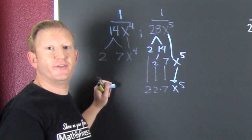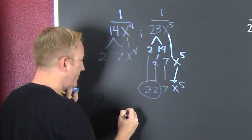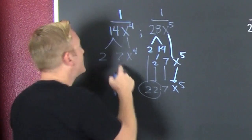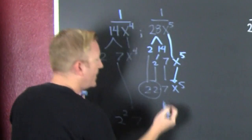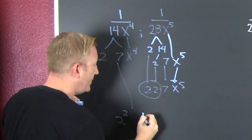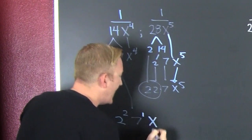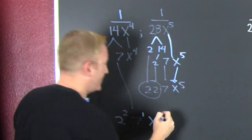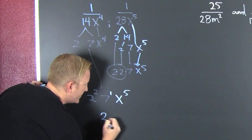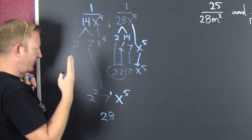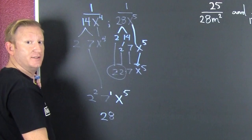Now we're looking at the factors. There's a two in there — which one has more twos? This one has more twos, so there are two twos. There's a seven in there, and they both have one seven, so there's only one seven in the common denominator. Then there's an X — which one has more X's? That one does — there are five X's. So the common denominator is going to be four times seven, which is 28.